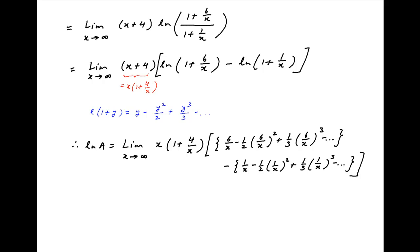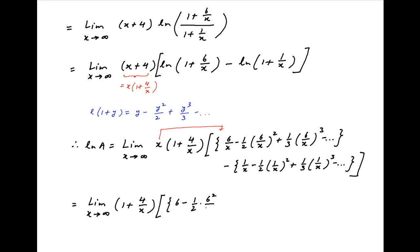Now multiply the expression in the square brackets by x, the term present outside the brackets. Therefore, ln a equals the limit as x tends to infinity of (1 plus 4 upon x) times [6 minus 18 upon x plus higher order terms in x, minus (1 minus 1 upon 2x plus higher order terms)].